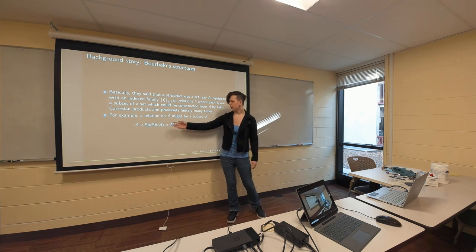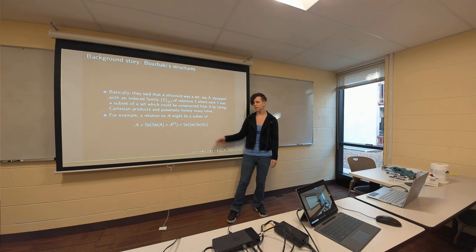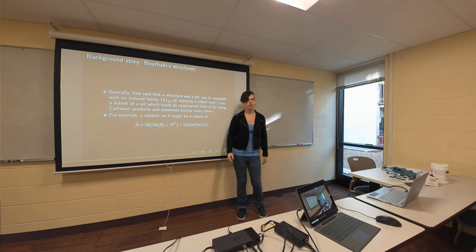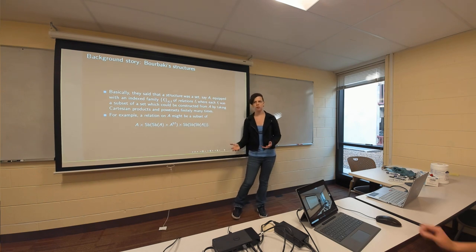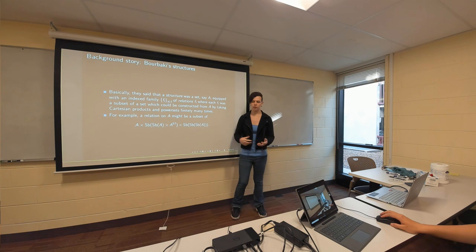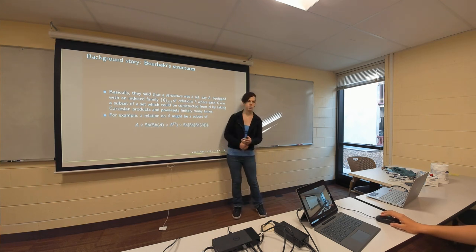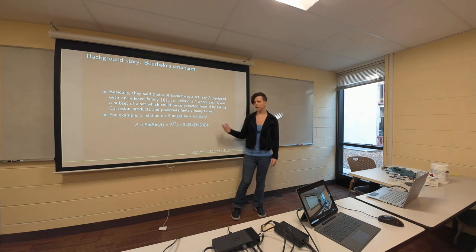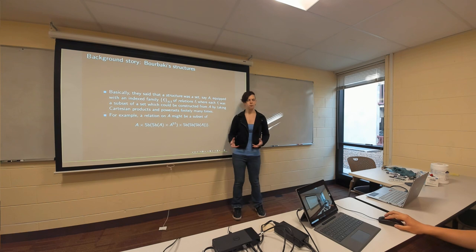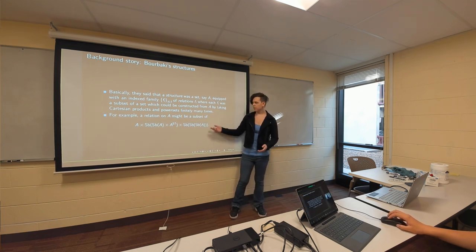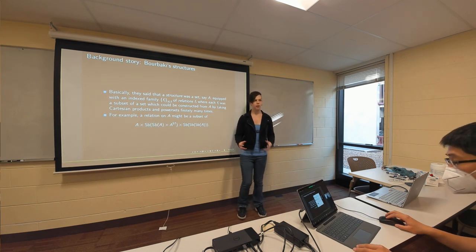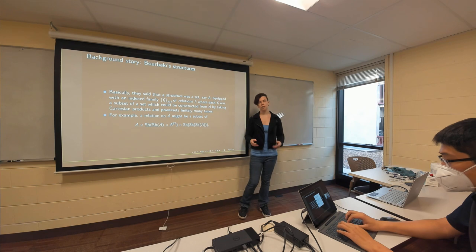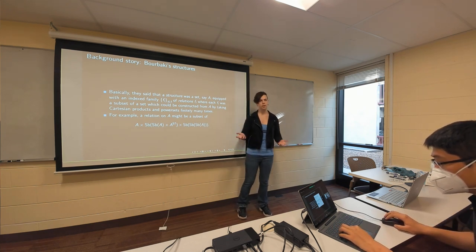For example, a relation on A might be a subset of subsets of A direct product with the 57th power of A, and so on. The reason they wanted this was that their notion of mathematical structure should encompass algebraic structures, order structures, and also topological structures. Traditional model-theoretic frameworks cover graphs and simplicial complexes, but to talk about topologies systematically you need to talk about families of subsets — hence they needed this more involved notion of relation, beyond what later became the model-theoretic notion.